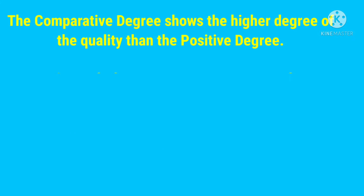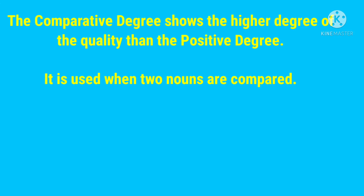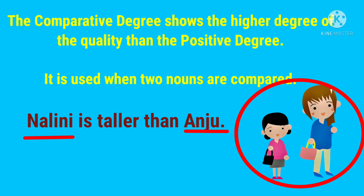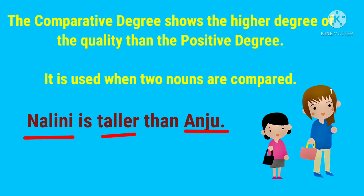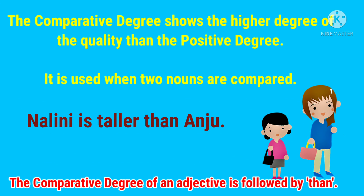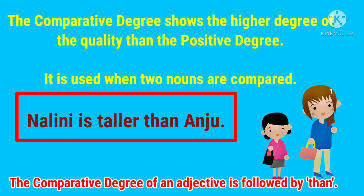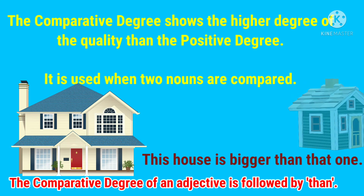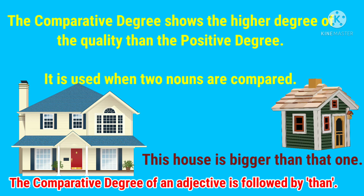The comparative degree shows a higher degree of quality than the positive degree, and it is used when two nouns are compared. For example, 'Nalini is taller than Anju' — here we compare two nouns. One important point: the comparative degree of an adjective is followed by 'than.' For example, 'This house is bigger than that one' — again a comparison between two houses, using the comparative degree 'bigger' followed by 'than.'